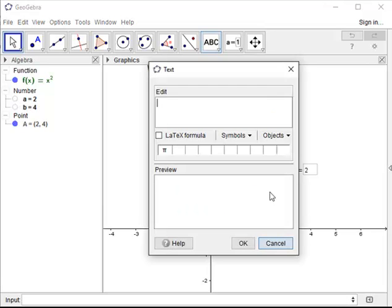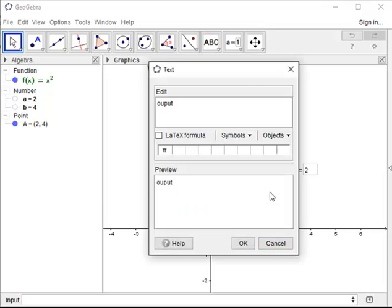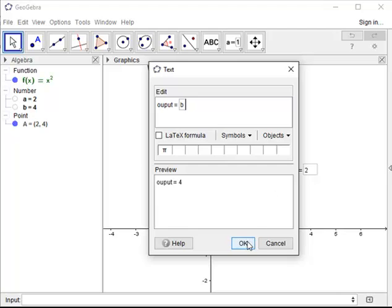So now we're going to put in the text, call it output, and we want to link it to that object b. We click OK.